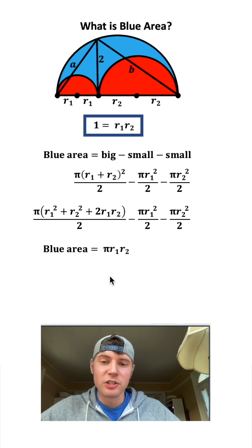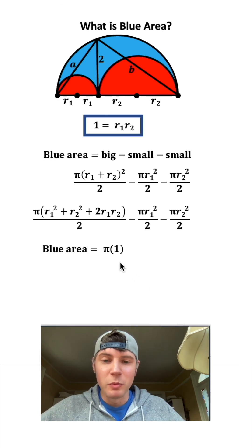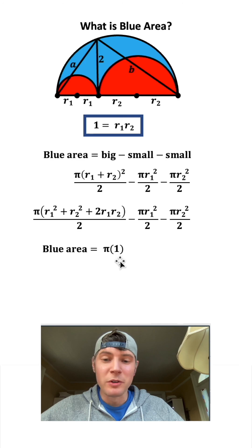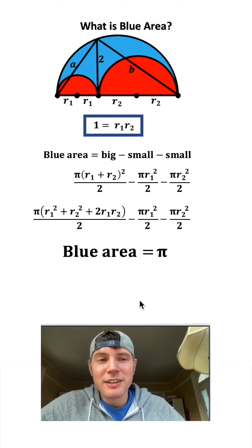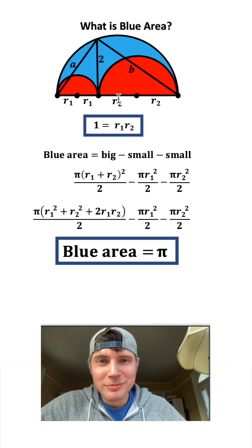The twos cancel each other out. Since r₁ × r₂ = 1, we plug in 1 for that product. Now we just have π × 1, which is simply π. So the blue area is equal to π — let's put a box around that. You guys are awesome. I'll talk to you soon. Bye.